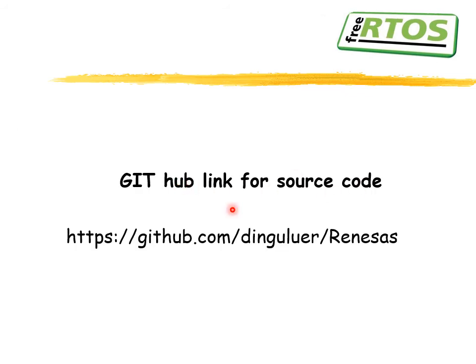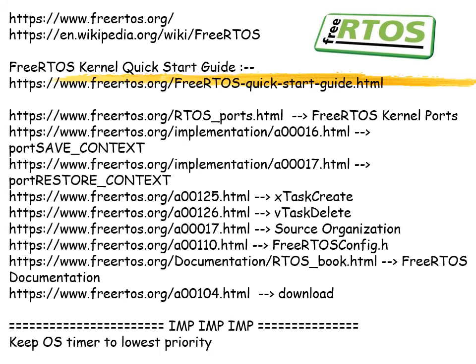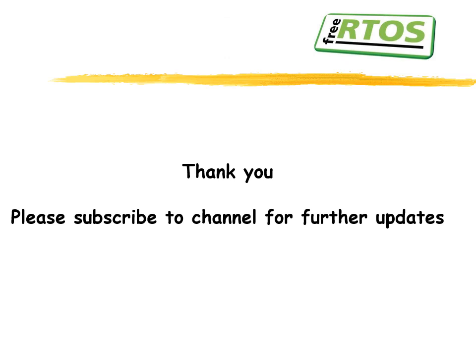The GitHub link for the source code will be found at this location. There is a lot of FreeRTOS documentation available — links for each function are mentioned. The most important thing is to keep the OS timer at the lowest priority. In the RH850 microcontroller you can set the priority of different interrupts, so the OS timer interrupt should be kept at the lowest priority. This is the first video regarding porting FreeRTOS — a few more videos will follow. If you like this video please like and subscribe to the channel for future notifications.